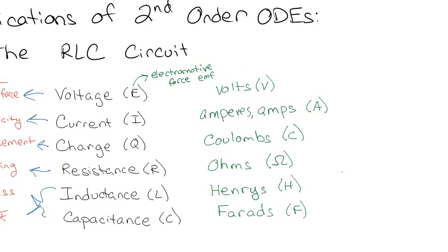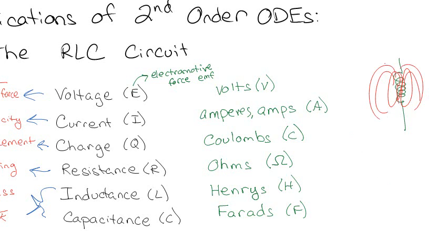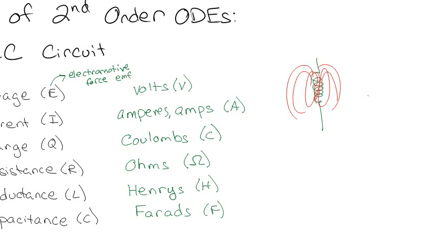An inductor is like a little spirally thing — if you've ever made an electromagnet by winding wire around, a magnetic force comes out from those spirals. What we know about the inductor is that the voltage across it is proportional to the speed at which current runs through it, so the voltage is L·di/dt.